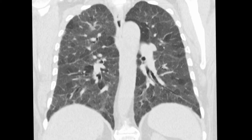In this coronal reconstruction you can clearly see well-demarcated areas of low attenuation due to air trapping against a surrounding ground glass infiltrate throughout the remaining secondary pulmonary lobules.